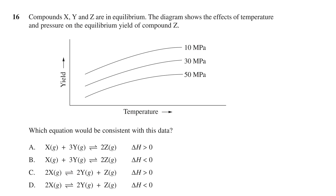Below this statement we see a yield versus temperature plot with three constant pressure curves at 10, 30 and 50 megapascals, with temperature on the x-axis and yield on the y-axis. The question asks which equation would be consistent with this data. This is followed by four reversible reactions showing different combinations of X, Y and Z gas molecules, with Z always one of the products, and an indication of the delta H as greater than or less than zero for each equation.